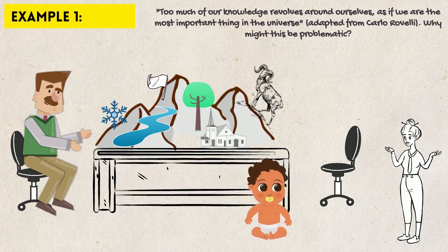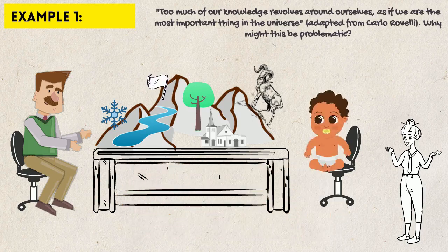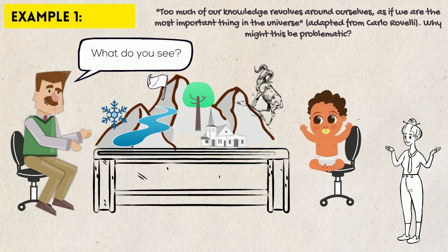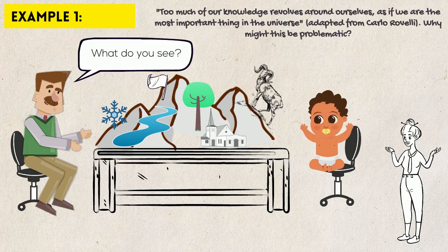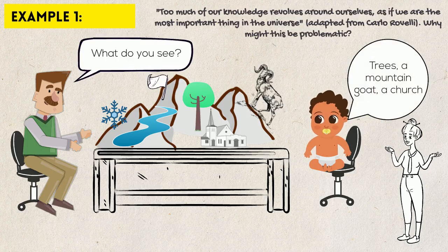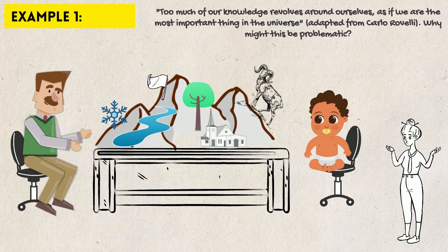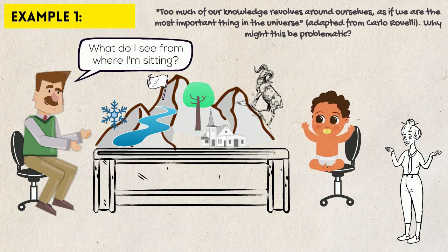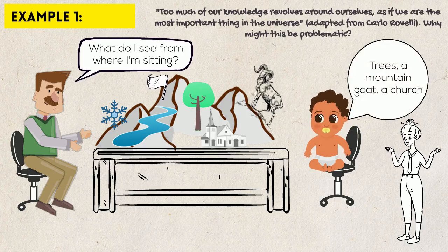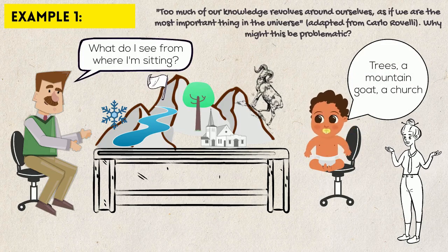When the child was back in their seat, Piaget would ask them, 'What do you see?' Obviously, they would describe details that were within their visual field, such as the mountain goat, the trees, and the small church. But then Piaget asked them, 'What do I see from where I'm sitting?' Up until a certain age, children invariably described their own visual field again. They said, 'You see a mountain goat, you see some trees on the slope and a small church.' They didn't realize Piaget had a different perspective.